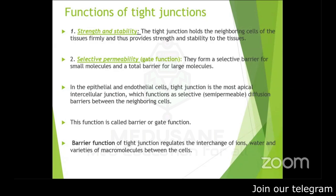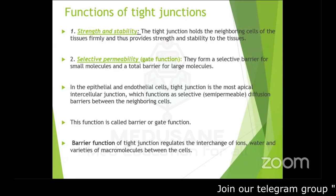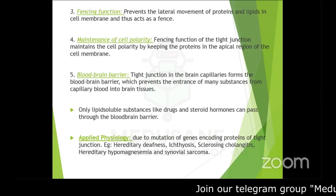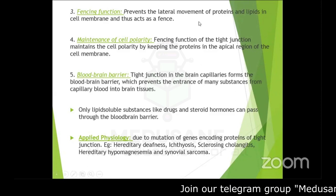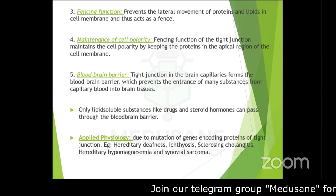Because of this barrier function, cells help regulate the exchange of ions, water, and a variety of other molecules. The second function is that tight junctions provide strength and stability to the cell by holding neighboring cells of the tissue very firmly. The third function is the fencing function — tight junctions prevent the lateral movement of proteins and lipids present in the cell membrane.